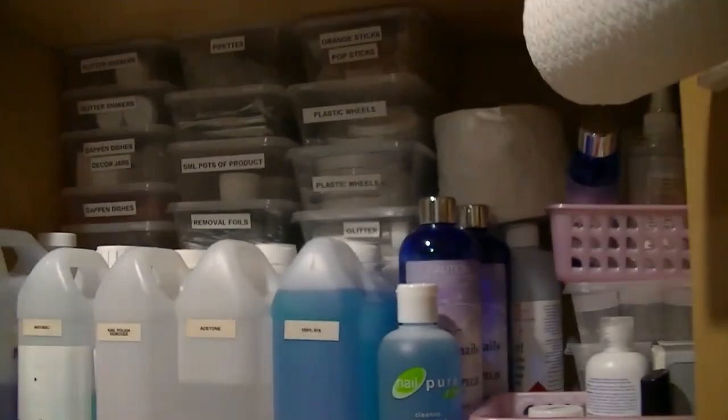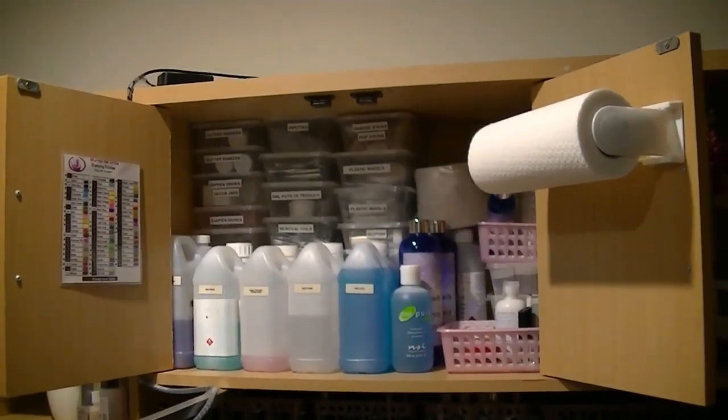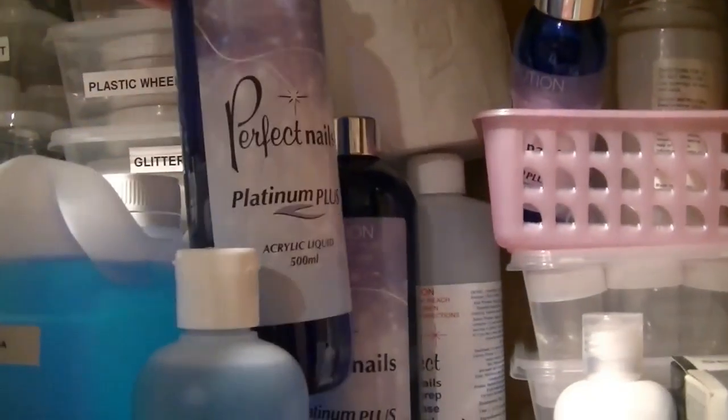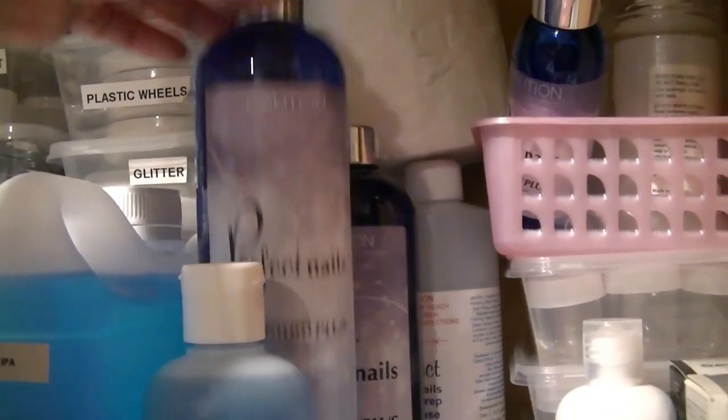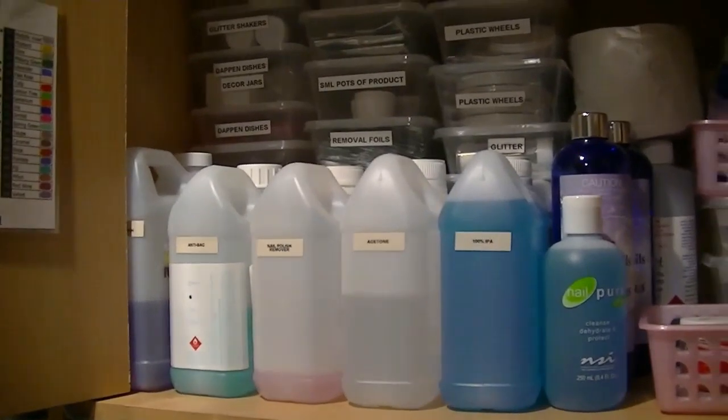In this top cupboard I keep all of my chemicals: my isopropyl alcohol, acetone, all sorts of things like that, and my monomer. I've just got a bit of extra storage up there for things that I don't use a lot of, packed away nice and neatly in those containers.